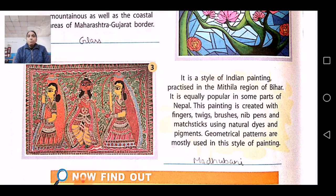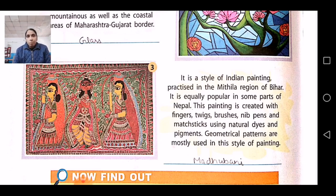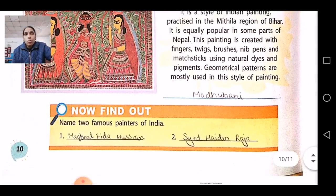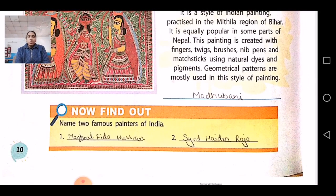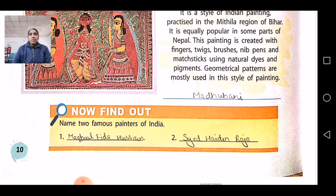In Madhubani painting, they depicted different instances — things which happen everyday, like girls going for water or someone passing by on a road. Now, two famous painters of India are Saeed Haider Raza and Maqbool Fida Hussain. The short name of Maqbool Fida Hussain is M.F. Hussain. He has received many awards and prizes for his art. He is one of the most famous painters of India.